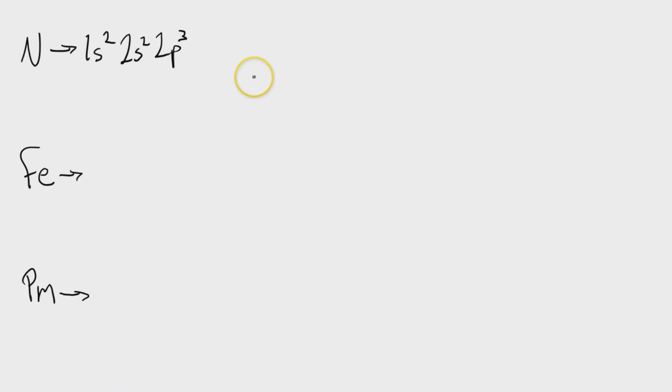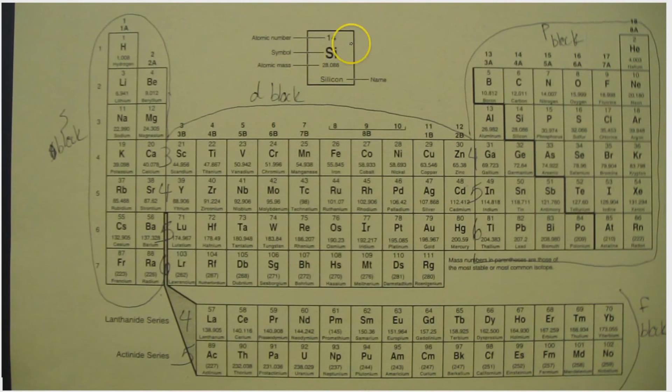Now, this is what we call the longhand notation, which obviously implies there is a shorthand notation. So here's how it works. You're going to go to your element, which in this case is nitrogen, and you're going to go backwards until you reach a noble gas. So in this case, it is helium.